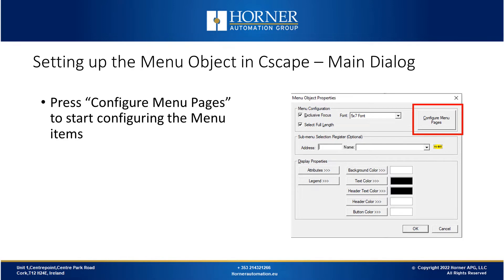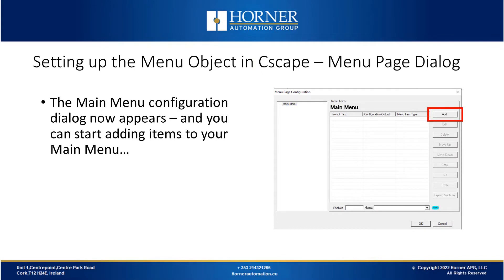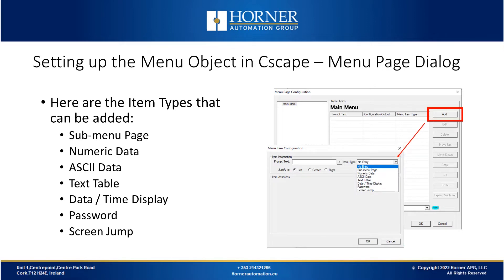Then you can begin configuring your menu pages by pressing the button in the upper right-hand corner and start adding items to your menu. In the main menu page dialog, hit the Add button. There's a variety of items you can add, including a sub-menu page pointer, numeric data fields, ASCII data fields, a text table, time and date displays, password data fields, and screen jumps — these are all the things available as items on your menu.